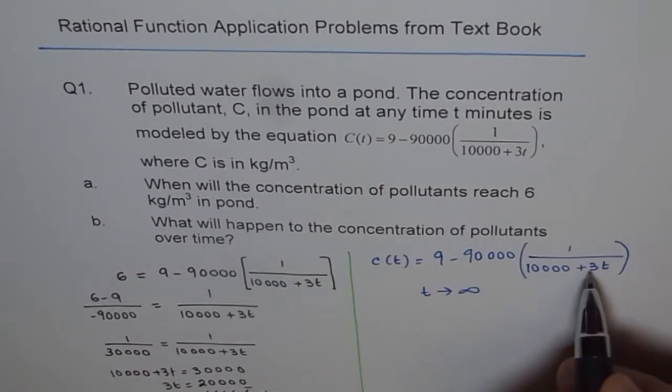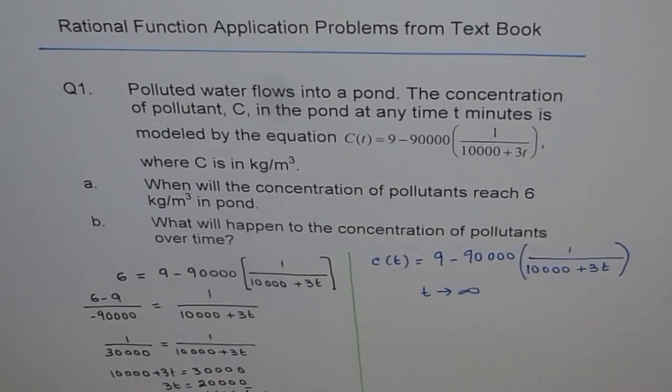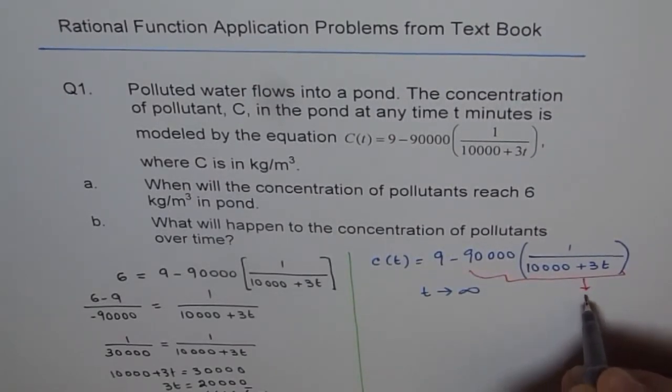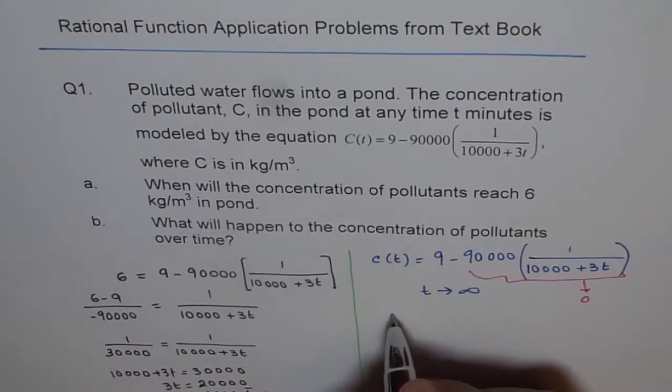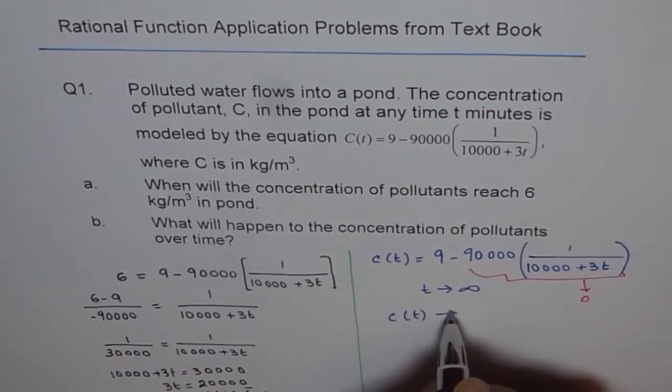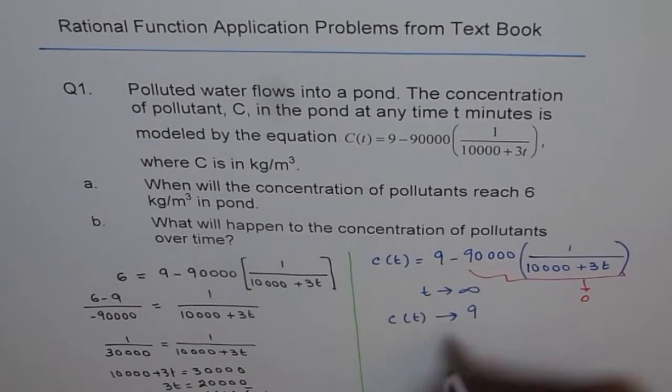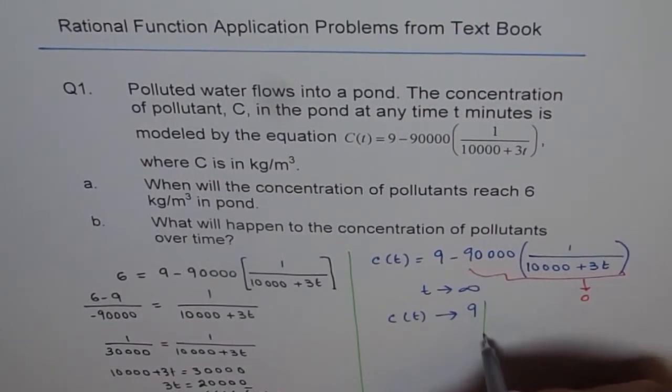In that case, 1 over a large value we are going to get. So this part of the fraction, this part of the equation will approach 0. Because 1 divided by a large value will approach 0. And since that part which we are taking out approaches 0, we have C(t) approaching the value 9.